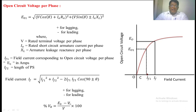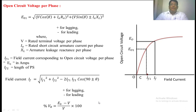This voltage minus the rated voltage, divided by the rated voltage, multiplied by 100, gives the voltage regulation of the alternator at full load. This method of calculating voltage regulation is the Potier triangle method. The reason we study this method over the EMF method is that the results obtained are practically very close to the actual values. The Potier triangle method is more accurate than the EMF method.